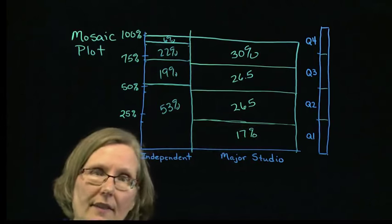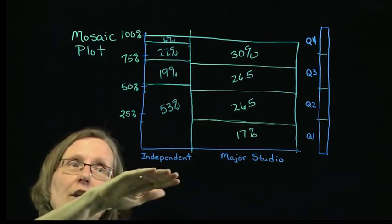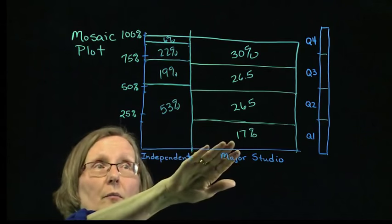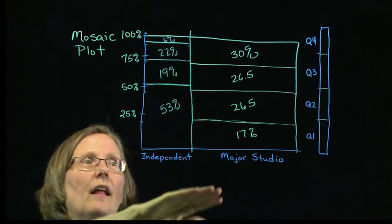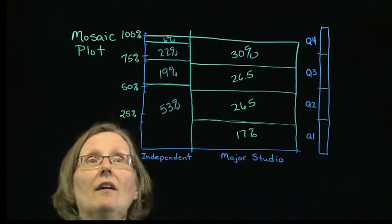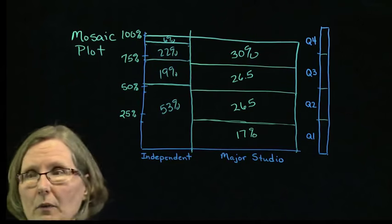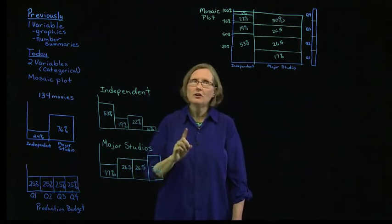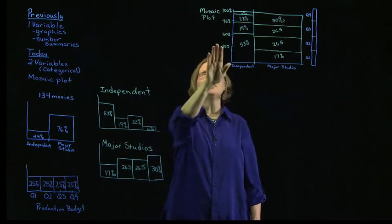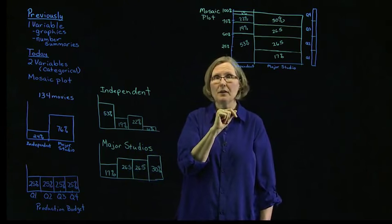Independent movies are much more likely to be in the first quartile than major studio movies are. The major studio movies are much more likely to be in the fourth quartile than the independent movies. That shows you how to graph the relationship between two categorical variables using a mosaic plot.